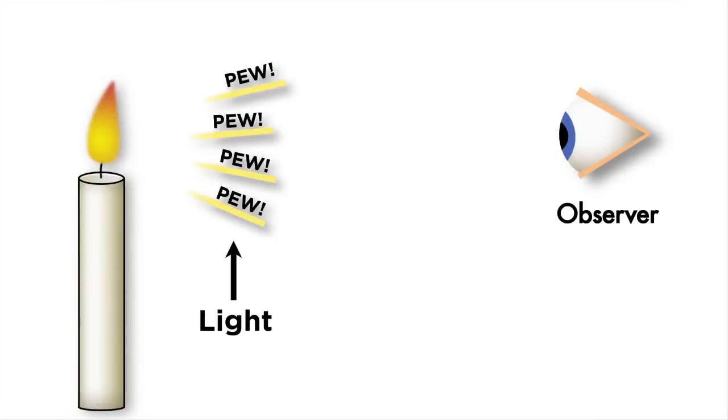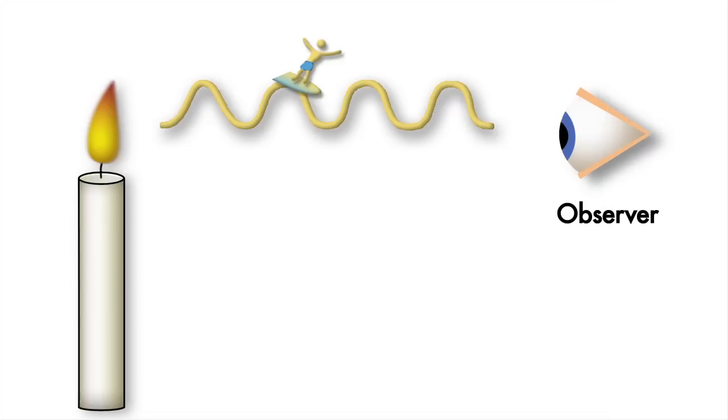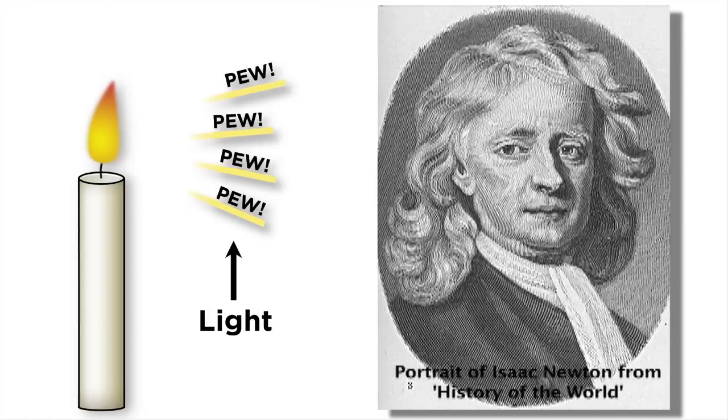One group of people held that light was a particle, traveling like a projectile from a source to an observer. Another group of people held that light propagated more like a wave, sort of like the waves you see moving along the surface of a body of water. Based on his own experiments and extensive observations, Sir Isaac Newton decided that light was most like a particle.